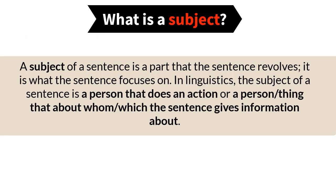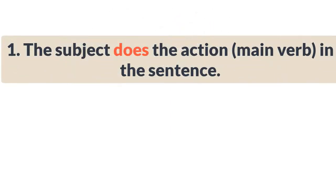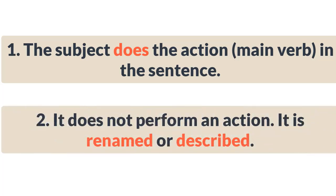So let's start with understanding what exactly a subject is. A subject of a sentence is the part that the sentence revolves around — it is the prime minister of a sentence. It is something or somebody the sentence focuses on. It's either a person that performs the action — the main verb of a sentence — or a thing. Generally, it's a person or thing that the sentence gives information about. There are two things: number one, the subject performs an action; number two, there is no action and the sentence simply gives information about it — it renames, describes, or modifies the subject.